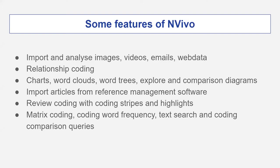Some features of NVivo: NVivo allows you to import and analyze images, videos, emails, web data, relationship codings, charts, word clouds, word trees, and comparison diagrams. You can import articles from reference management software, review coding with coding stripes and highlights, matrix coding, coding word frequency, text search, and coding comparison query. These are some of the features, but you can do many other things.